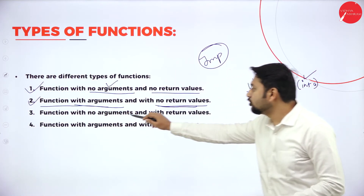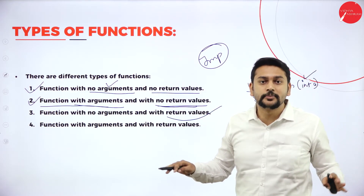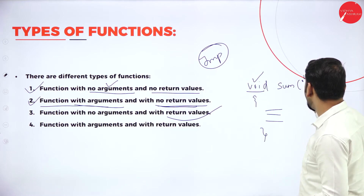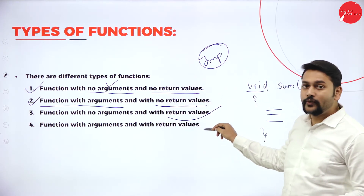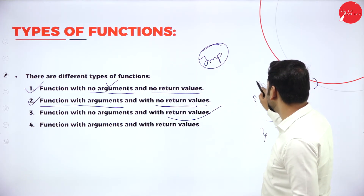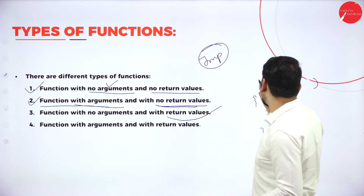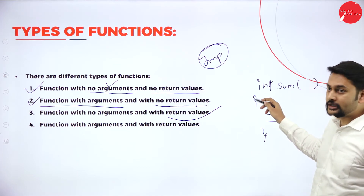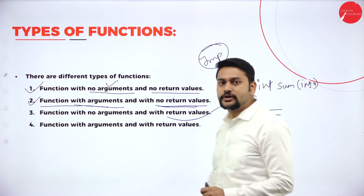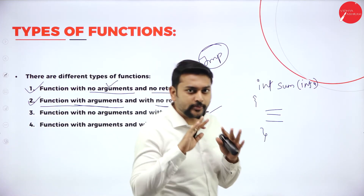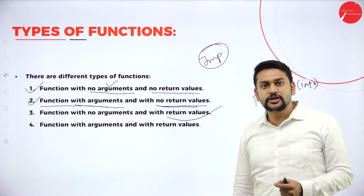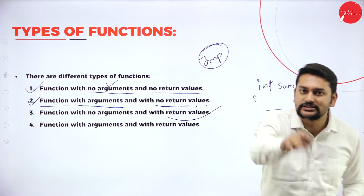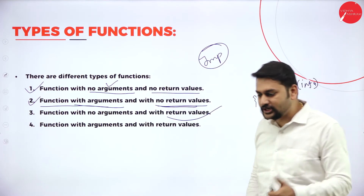The third type is function with no arguments but with return type. No arguments means empty parentheses. With return type means I should not have void — instead I should have int, because it should return values. The fourth type is function with arguments and with return type — I have both return type and arguments. The fifth type is recursion: if the function is calling itself again and again, I call that a recursion function. That is the fifth type.